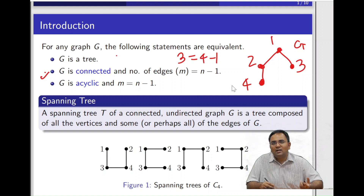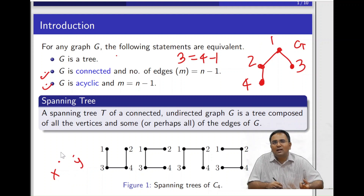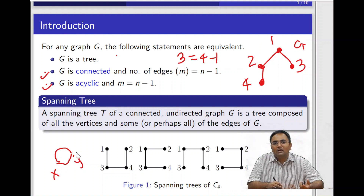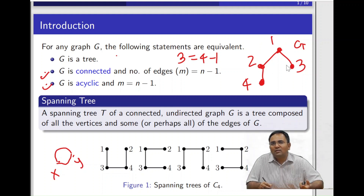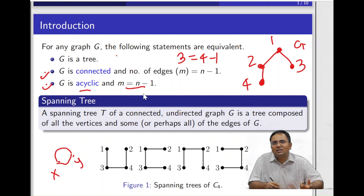Now let's understand the second definition: the structure is acyclic, meaning there is no cycle. Let's assume what happens if a cycle is present. If a cycle exists between x and y, then there exist two paths from x to y, which contradicts our first observation that between any pair of vertices there exists a unique path. Therefore the structure must be acyclic.